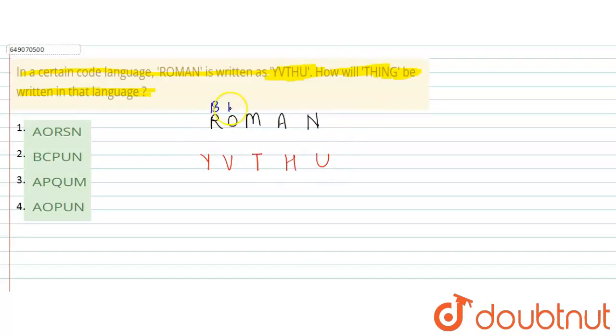The place values are: R=18, O=15, M=13, A=1, N=14. And for the code: Y=25, V=22, T=20, H=8, U=21.